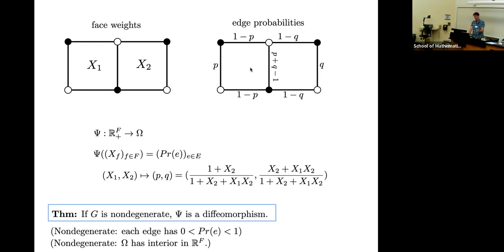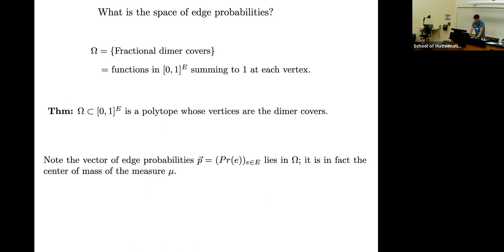That makes it interesting to ask: I have this map from weights to probabilities between two spaces of the same dimension — what is that map? More generally, there's a certain polytope, which I'm calling capital Omega, called the polytope of fractional matchings. These are just functions on the edges which take values in [0,1] and which sum to one at each vertex.